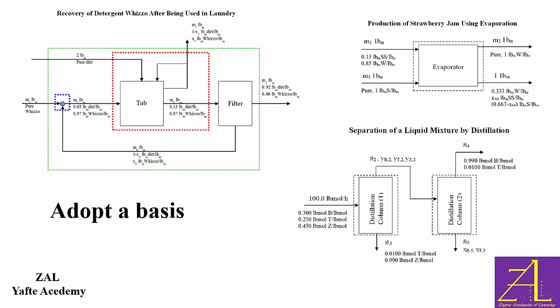Adopting a basis is normally the first step. A good basis is one that can make the solution of the problem easier and saves time. Basis can be related to any stream. In the distillation problem, a feed of 100 lbmol per hour was taken as a basis, while in the strawberry problem, 1 lbm mass of product was the basis.